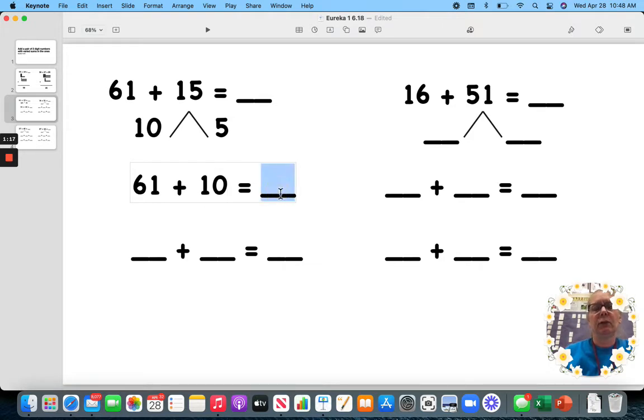Okay, that gives me 71. 71 plus my 5 I did not use is 1 and 5 is 6. So we have 76.